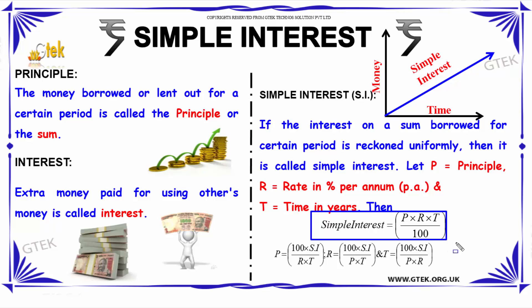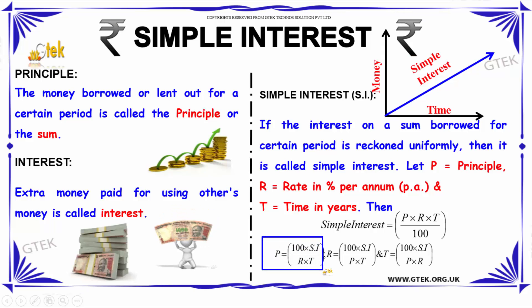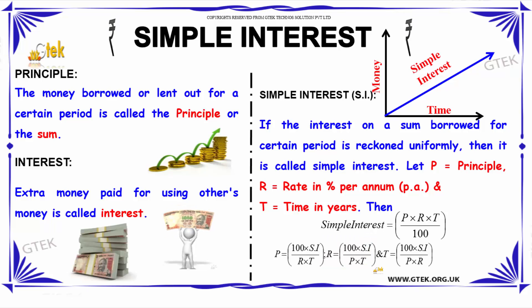From this expression we can find the principal amount using: P = 100 × SI / (R × T), where R is the rate of interest, T is the time, and SI is the simple interest. We can find the rate of interest using: R = 100 × SI / (P × T). Similarly, we can find the time using: T = 100 × SI / (P × R).